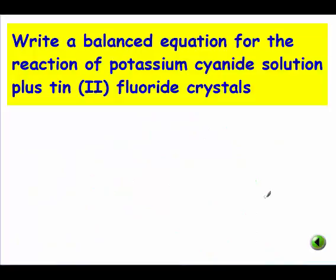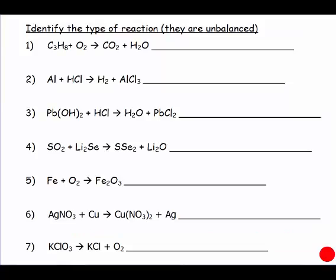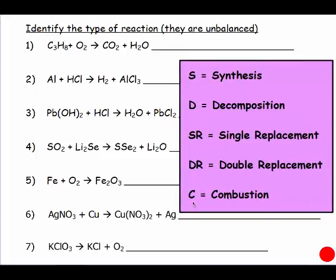Pause the video and write your reactants and predict your products for this reaction. The answer is KCN plus tin(II) fluoride — that's a double replacement reaction. Potassium went with fluorine and tin(II) went with cyanide. On this next set of problems, you're going to identify the types of reactions. Notice they are unbalanced skeleton equations. You can use the abbreviations: S for synthesis, D for decomp, SR for single replacement, DR for double replacement, or C for combustion.